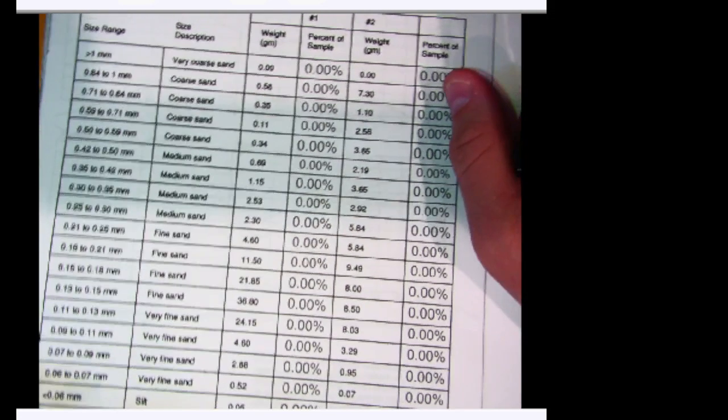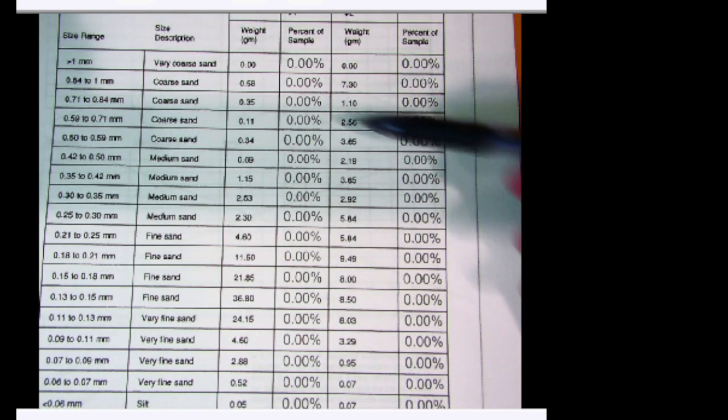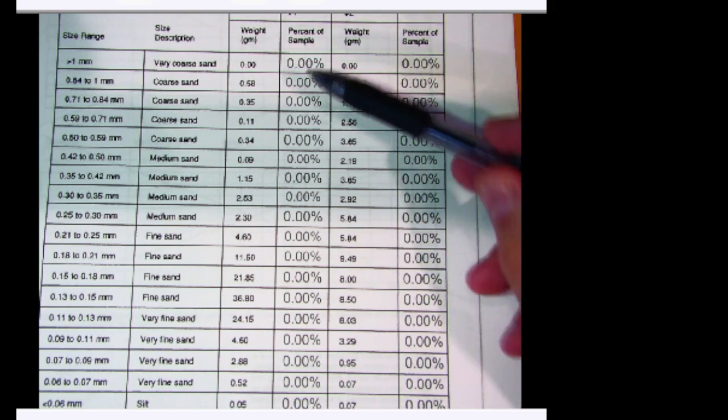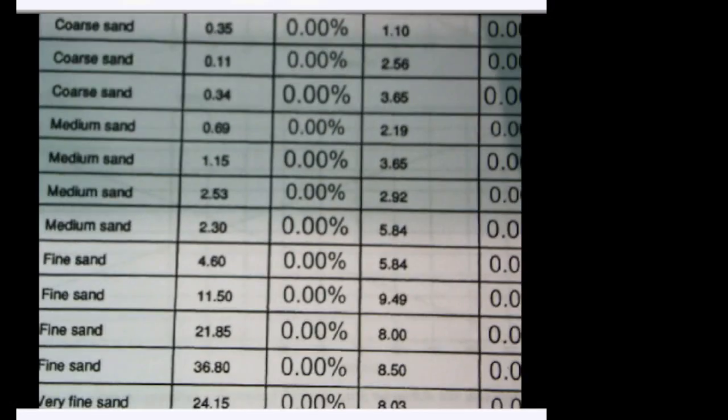Since this lab is online, you're not collecting sand and running it through sieves. The section requiring physical sieve data is crossed out — you don't need to use it. Instead, you have a different chart on the PDF where the zeros are empty and you have to calculate and fill in the values.